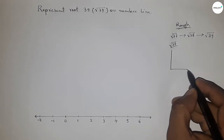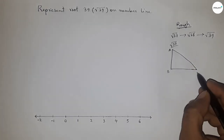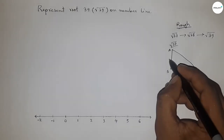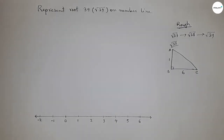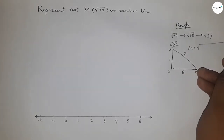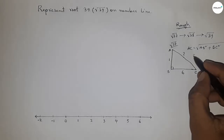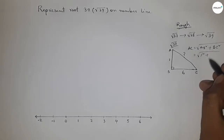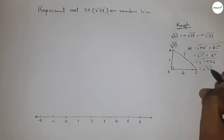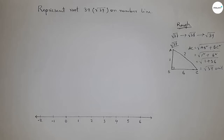For root 37: if there is a right angle triangle ABC with base 6 units and height 1 unit, then by the Pythagorean theorem, hypotenuse equals root of (height squared plus base squared), which is root of (1 squared plus 6 squared) = root of (1 + 36) = root 37 units.